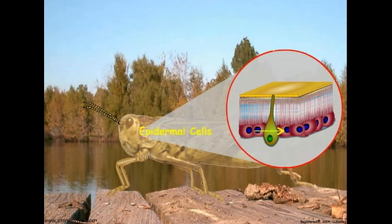The epidermal cells are the living part of the integument. Epidermal cells form a monolayer below the cuticle, and they secrete the overlying structural layers with the exception of the cement layer which is a product of the dermal glands.